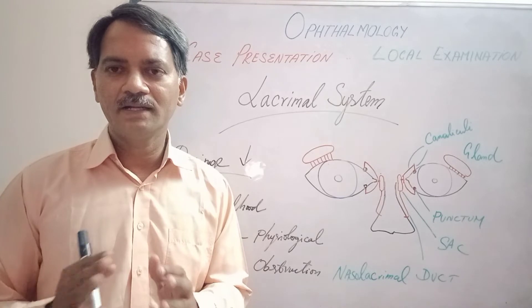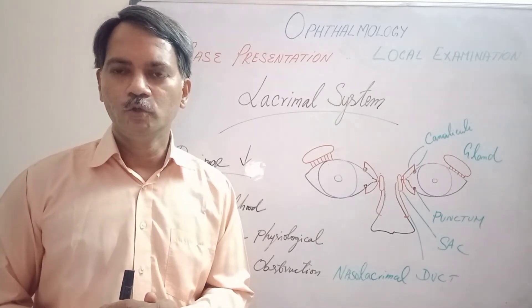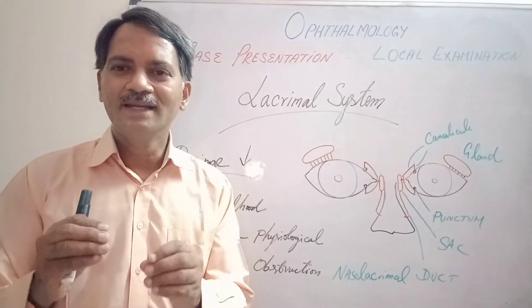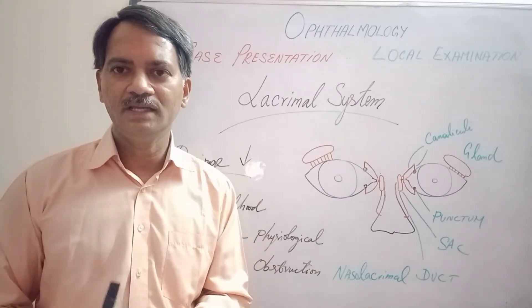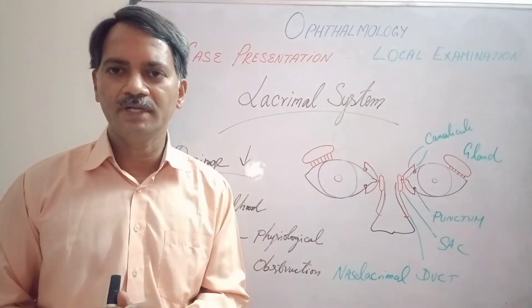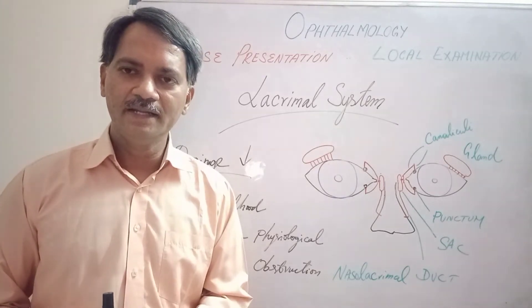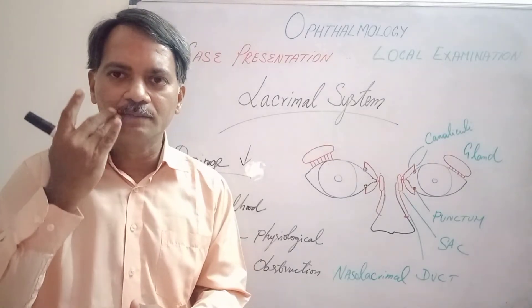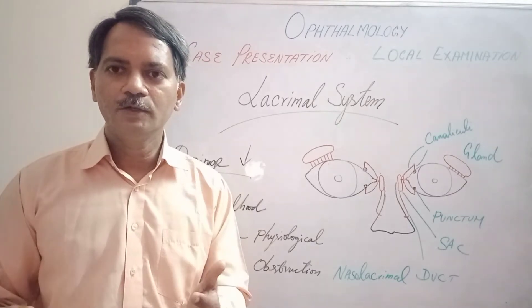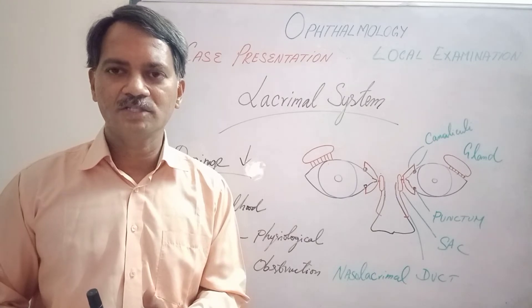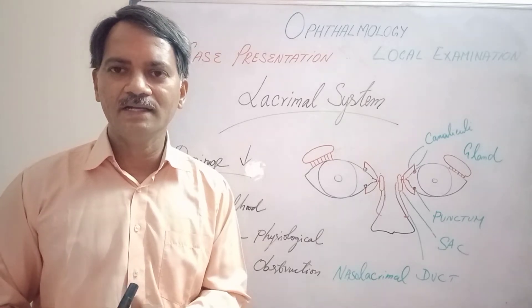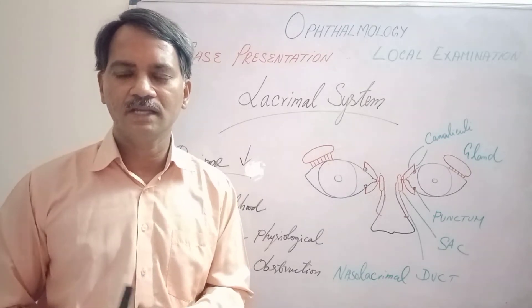Now let us see the abnormalities in the lacrimal drainage system. Usually there is incomplete or improper drainage of tear fluid from the conjunctival sac, causing excess fluid to collect and dribble down over the face — this is called epiphora. Watering due to obstruction in the lacrimal drainage system is called epiphora, whereas watering due to excessive secretion by the lacrimal gland is called hyperlacrimation.